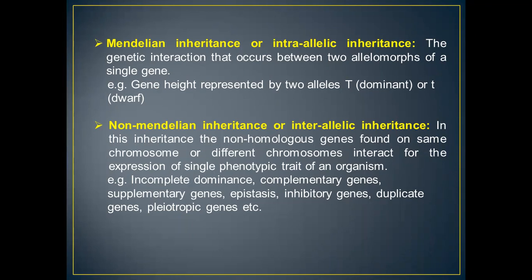However, non-Mendelian inheritance, which we also know as inter-allelic inheritance, is the inheritance where non-homologous genes found on the same or different chromosomes interact for the expression of a single phenotypic trait of an organism. There are many examples of non-Mendelian inheritance — for example, incomplete dominance, complementary genes, supplementary genes, and pleiotropic genes, to name a few.